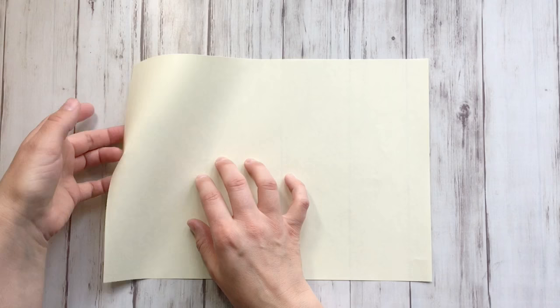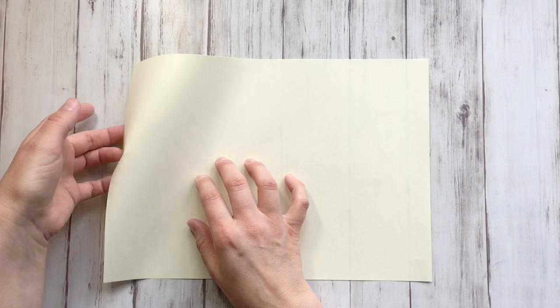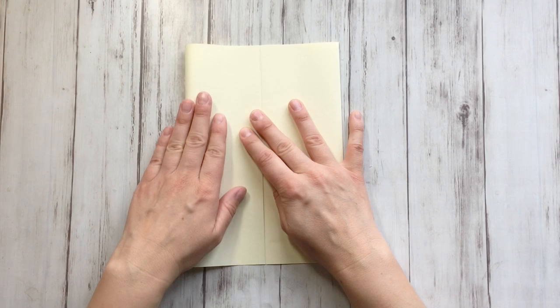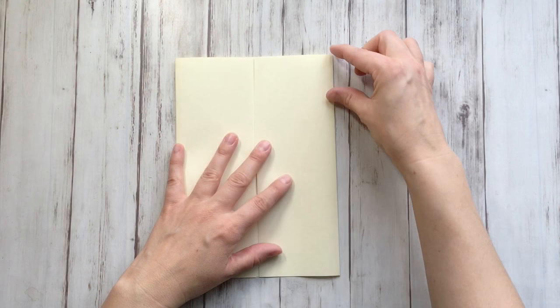Fold it in half, fold back open, and then fold one side to the middle line. Fold the other side to the middle line, and then fold approximately one-fifth from the whole height. So I think that's about here, down.